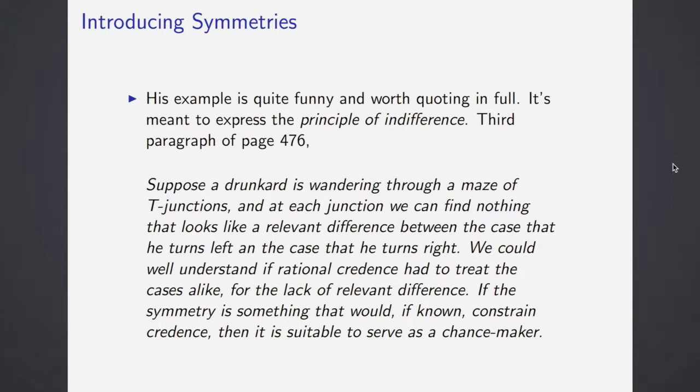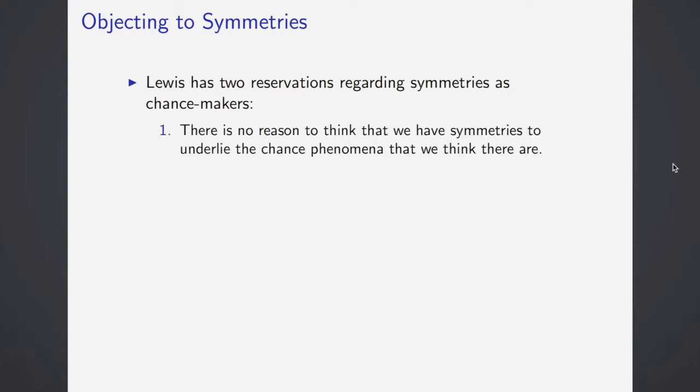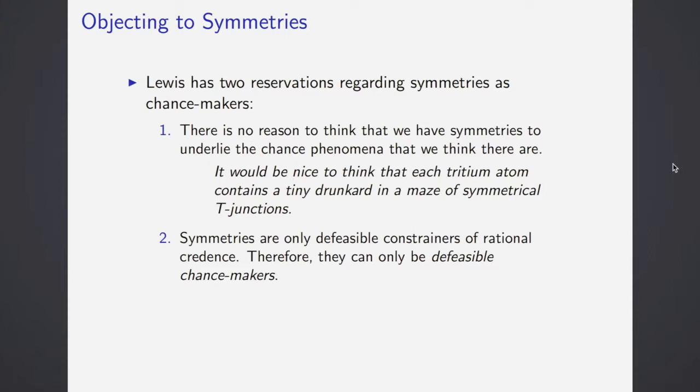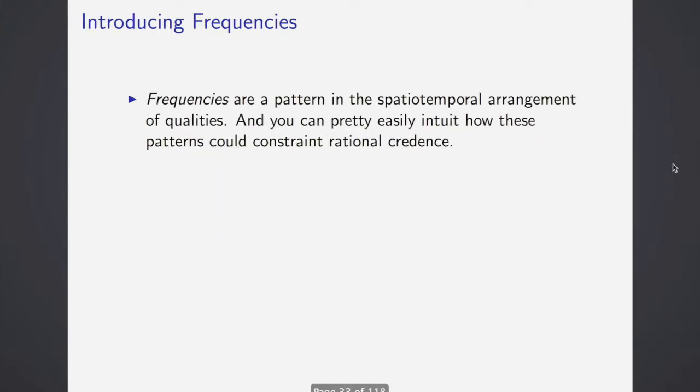But limit the principle only to natural properties. He has two reservations about using symmetries like this. The first is that there's reason to think that symmetries do not underlie the chance phenomena that we think there are. It would be nice to think, this is Lewis, it would be nice to think that each tritium atom contains a tiny drunkard in a maze of symmetrical t-junctions. His other objection is that symmetries are only defeasible constrainers of rational credence. Therefore, they can only be defeasible chance makers. The symmetry of t-junctions would no longer require 50-50 division of credence if we also knew that despite the symmetry, the drunkard turns right nine times out of ten.